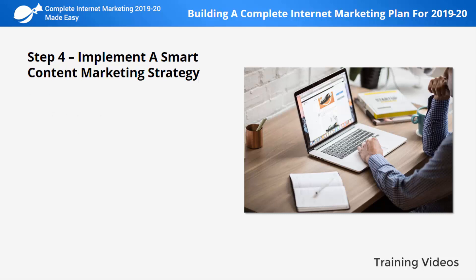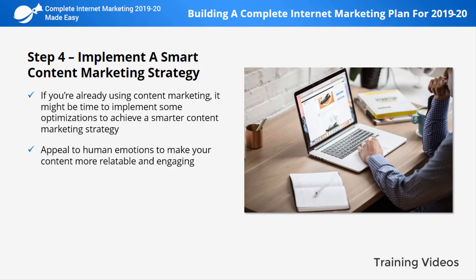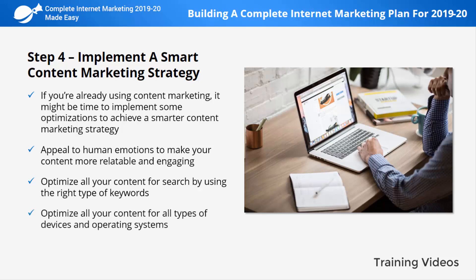Step number four: implement a smart content marketing strategy. If you're already using content marketing, it might be time to implement some optimizations. Whether it's video, articles, or visual discovery, some elements you have to implement include: appealing to human emotions to make your content more relatable and engaging — use humor, drama, and nostalgia to hit your audience's core emotions. Optimize all your content for search by using the right keywords, and optimize it for all types of devices and operating systems.